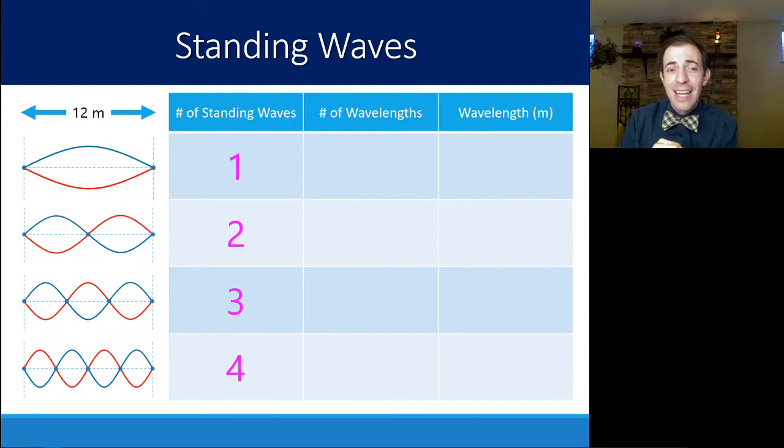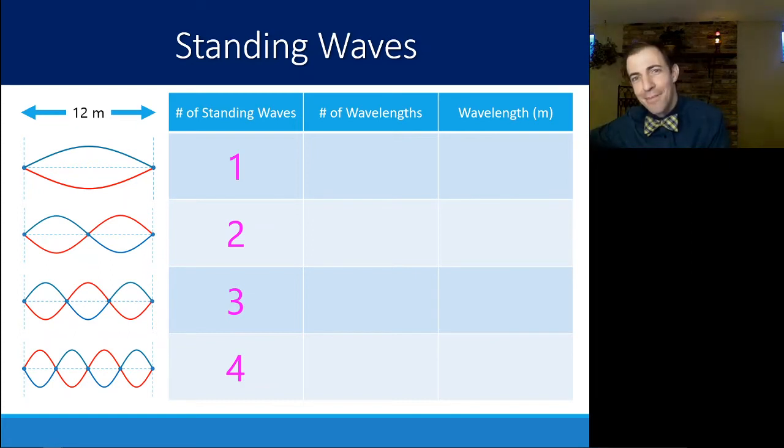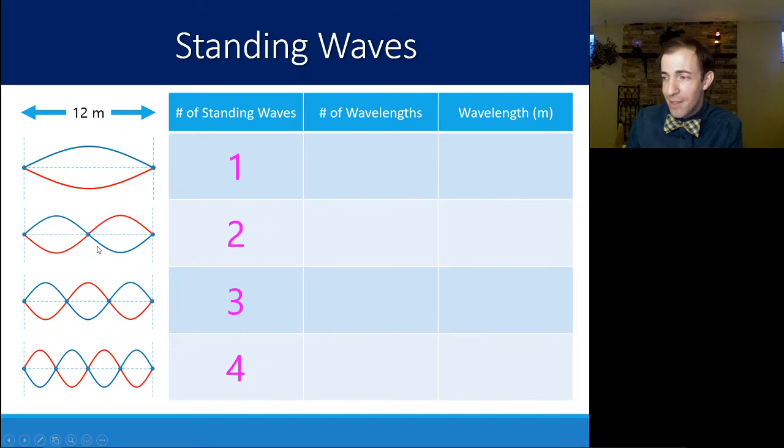Counting the number of wavelengths is different than counting the number of standing waves. If you remember, a wavelength is when the wave goes from one maximum to the minimum and back. So if we look at just one part of this wave, just the blue or just the red, we see that for this two standing wave picture it goes up, down, and back. That is actually one full wavelength there. So two standing waves produces one wavelength.